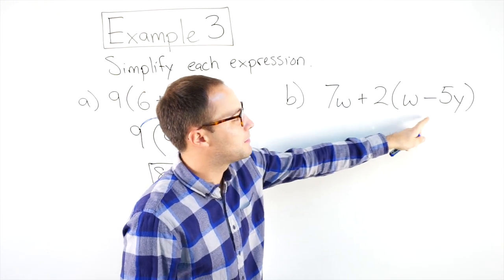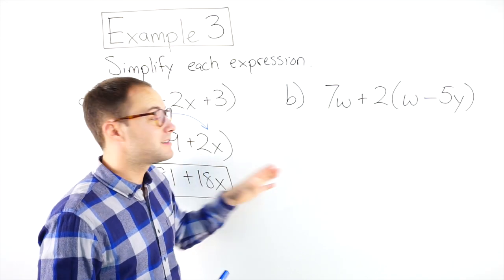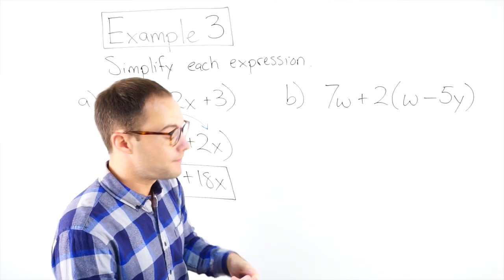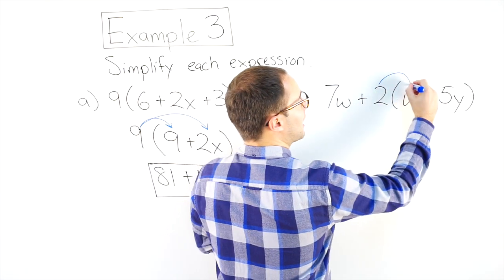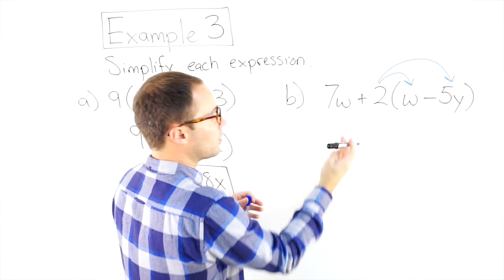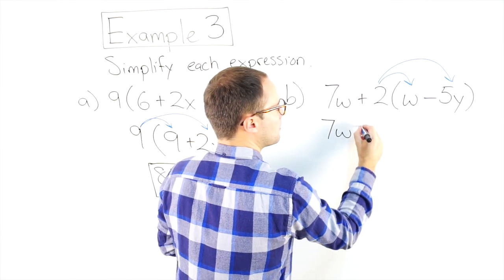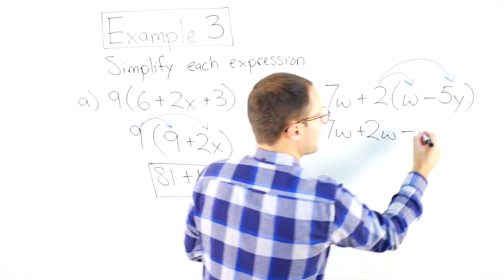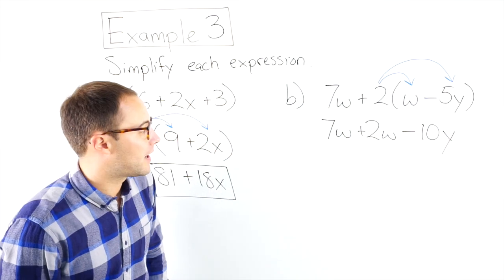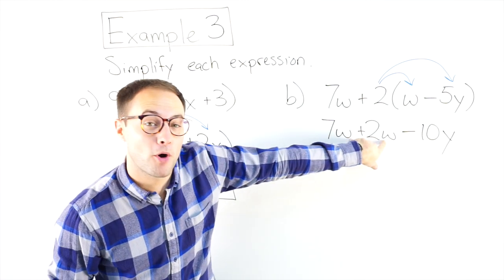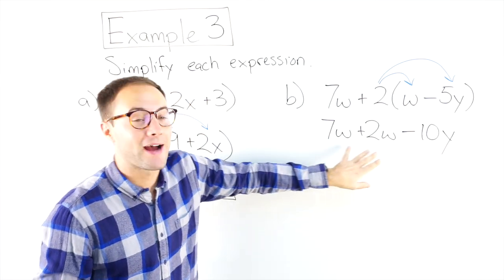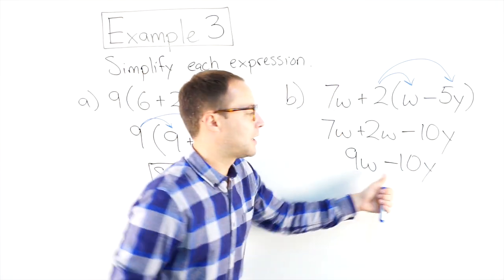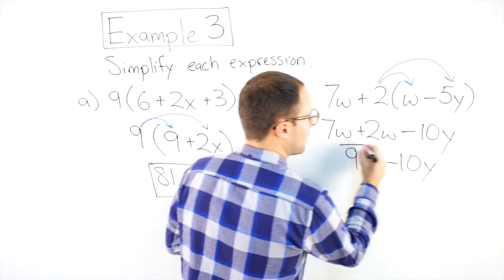7w plus 2 times the quantity w minus 5y. Check the parentheses first — I can't combine w and 5y because they're not like terms. So I distribute: 2 times w is 2w, and 2 times 5y is 10y. Bringing down 7w, I now have 7w plus 2w minus 10y. 7w and 2w are like terms, so combining them gives 9w. W and y are different variables, so 9w and 10y are not like terms. Final answer: 9w minus 10y.